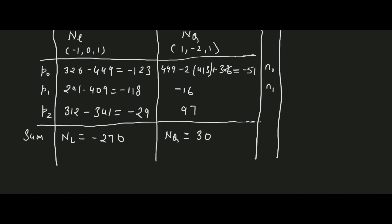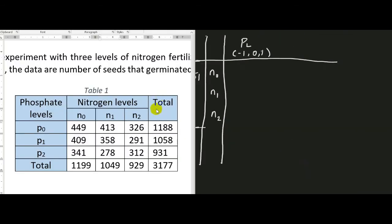In a similar fashion, we compute the linear effect of phosphate at all three levels of nitrogen using coefficients −1, 0, and 1. The linear effect of phosphorus at low nitrogen is 341 minus 449, which equals −108. At intermediate nitrogen it is 278 minus 413, which equals −135. At high nitrogen it is 312 minus 326, which equals −14.